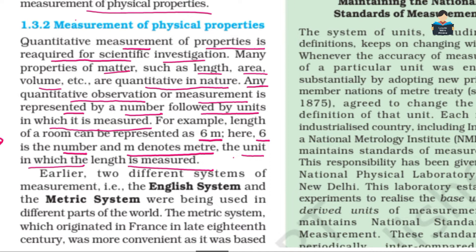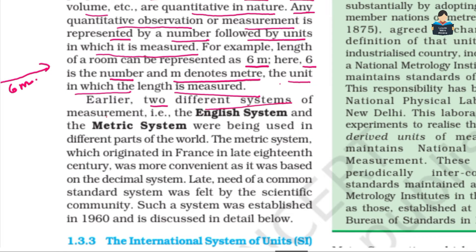Earlier, two different systems of measurement — the English system and the metric system — were used in different parts of the world. The metric system, which originated in France in the late 18th century, was more convenient as it was based on the decimal system, which is easier to use.